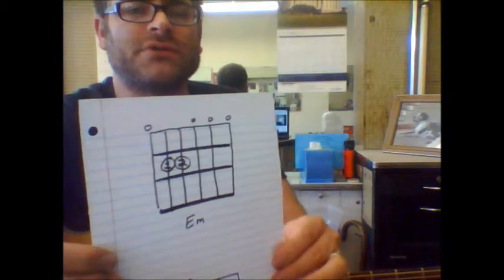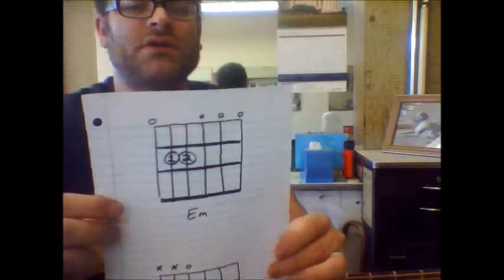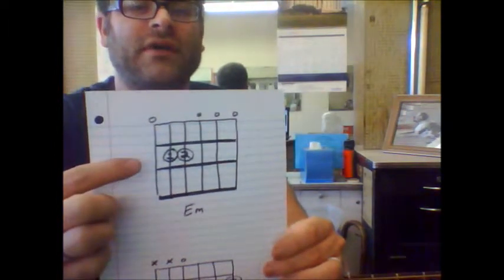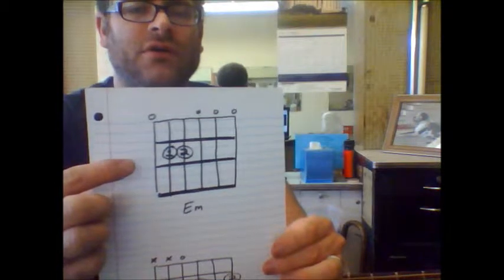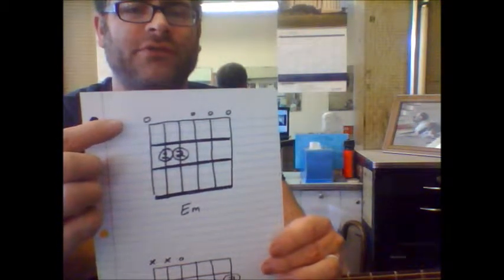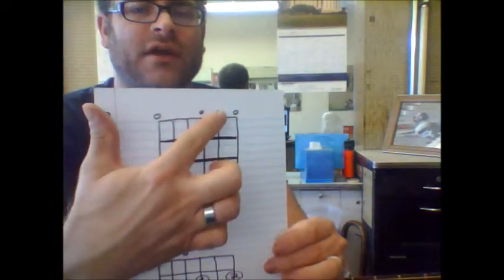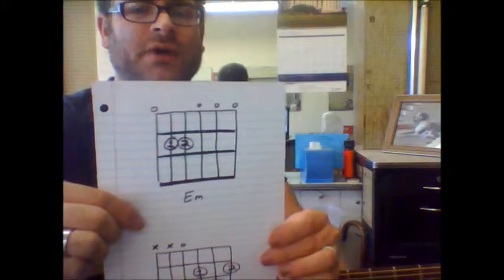So you'll see the numbers in the circles, and those represent the fingers that are used. 1 and 2 are the fingers that are used. You can see that they're on the second fret. You can also see where the strings are open. And that is the 6th string there, the 3rd, 2nd, and the 1st string are all open. So there's your E minor.